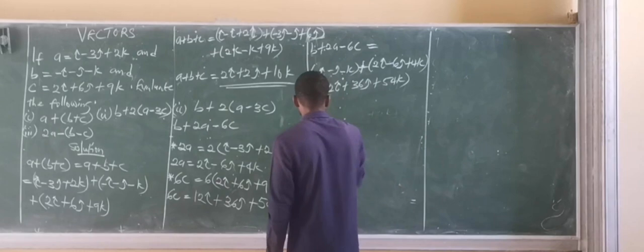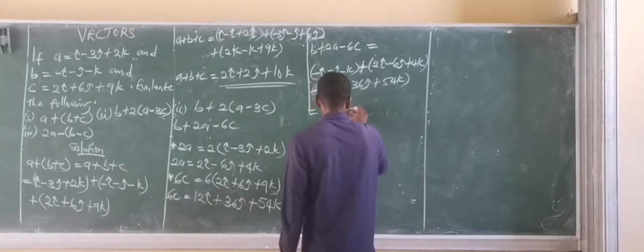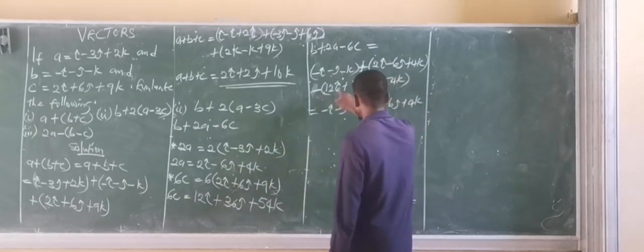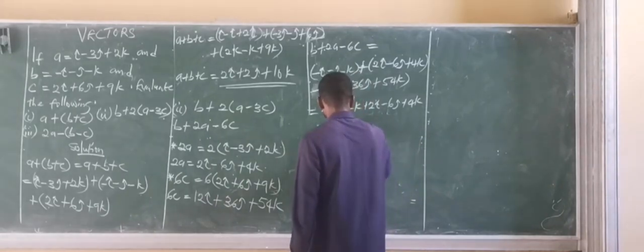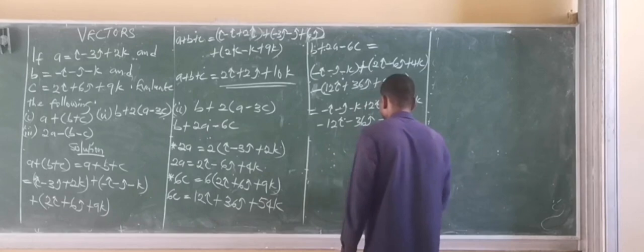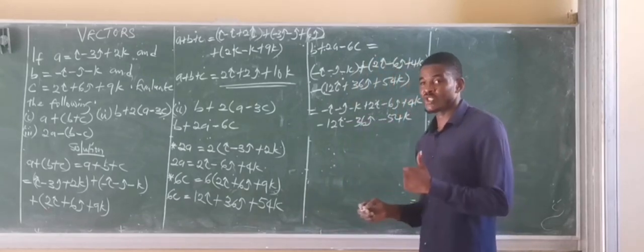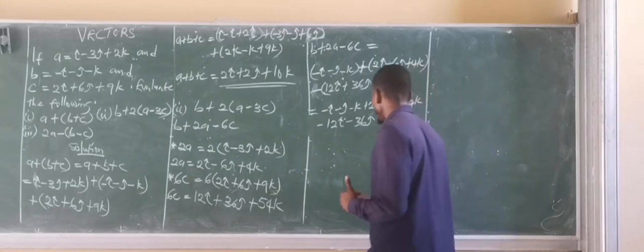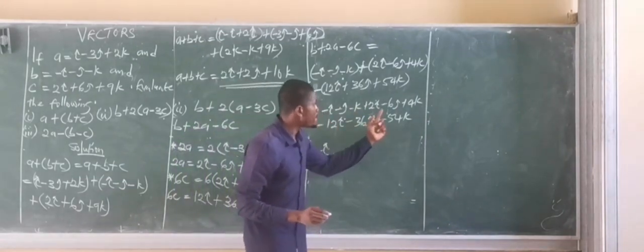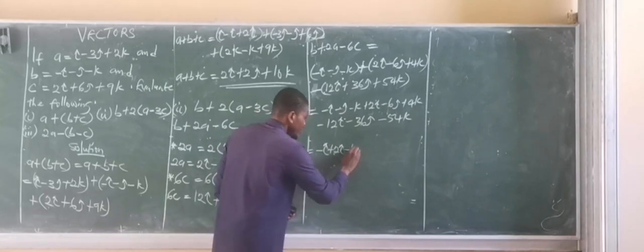So let's evaluate this. We have minus I, minus J, minus K, plus 2I, minus 6J, plus 4K. Now with the minus sign expanding this bracket for minus 6C, we have minus times 12I giving minus 12I, minus times minus giving plus, so minus 36J, and minus times plus giving minus 54K. Vectors can only add when they move in the same direction, so I will only add with I, J with J, K with K. We bring all the I terms together: minus I, plus 2I, and minus 12I.